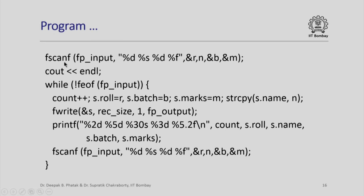We first read from fpinput the values for r, n, b and m using format specifiers %d, %s, %d, %f, since we have exactly four values separated by blank spaces. We start the while loop iterating as long as fpinput has not ended — not feof(fpinput) — and continue to iterate through all records.